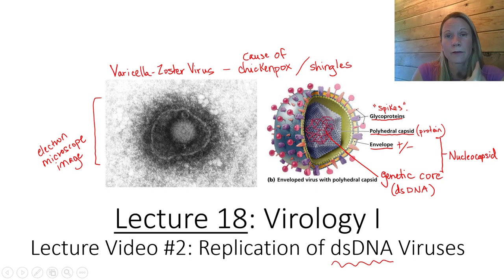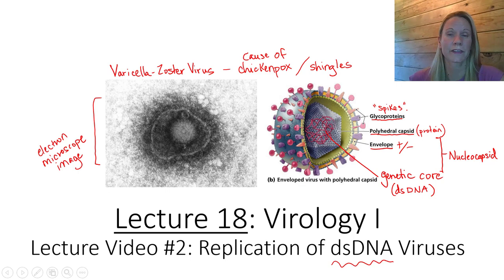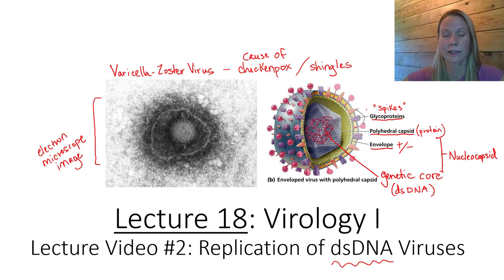Remember the viral envelope is actually stolen from the host cell. When the virus is released from the cell it takes some of that cell's membrane with it, and wears that as a way to confuse the immune system — using it like a decoy. It's covering itself in something that is very cell-like, even though it's not identical to the cell membrane, because there are still these viral spikes sticking out from the surface of the virus.